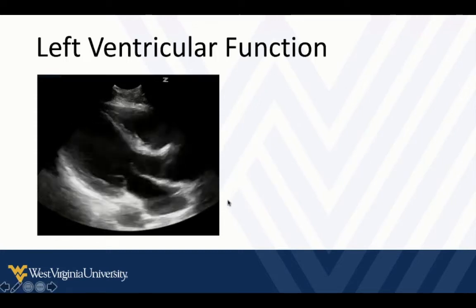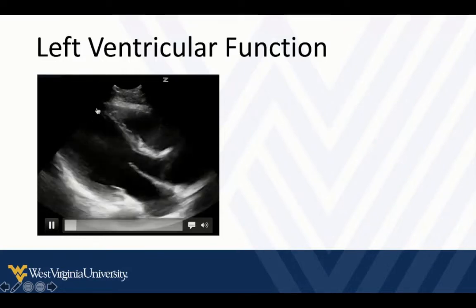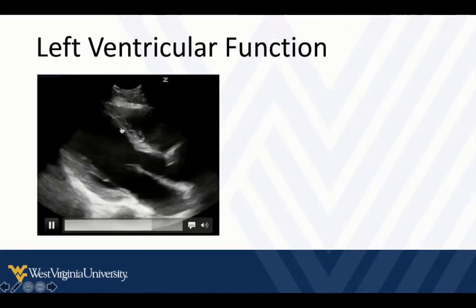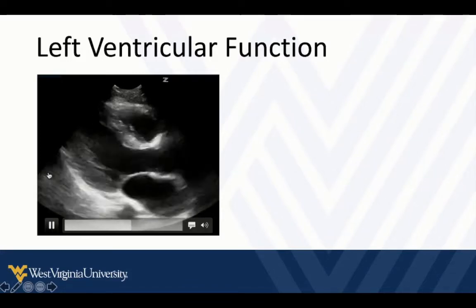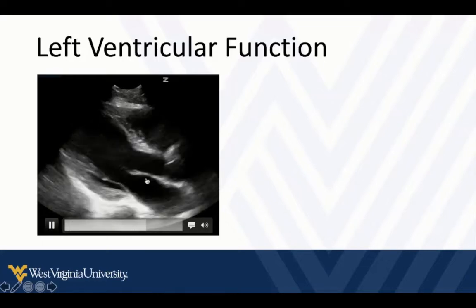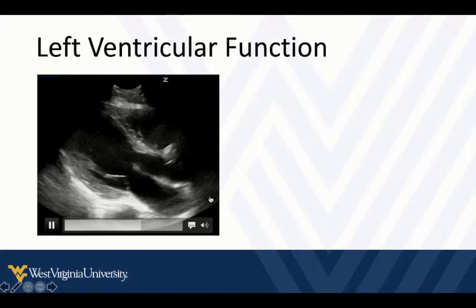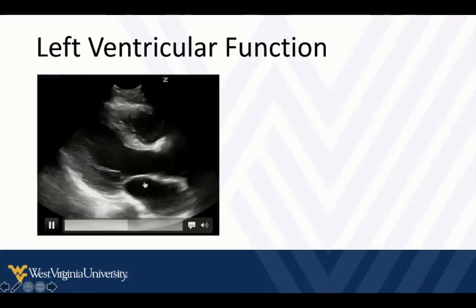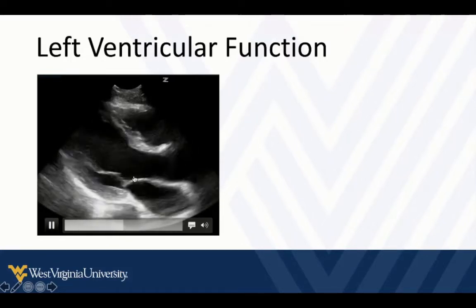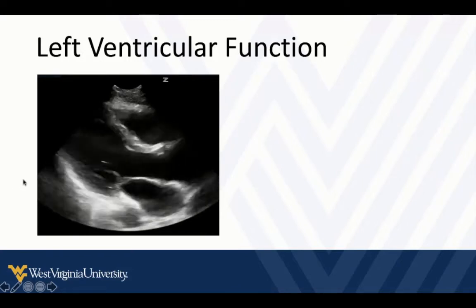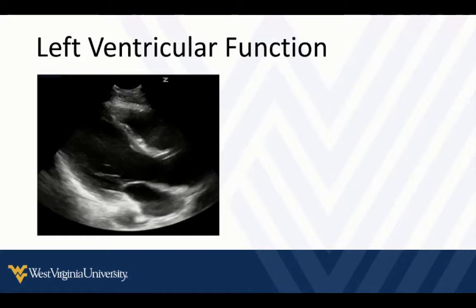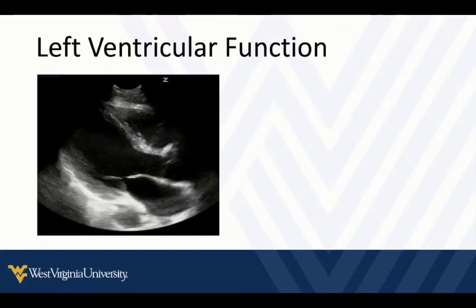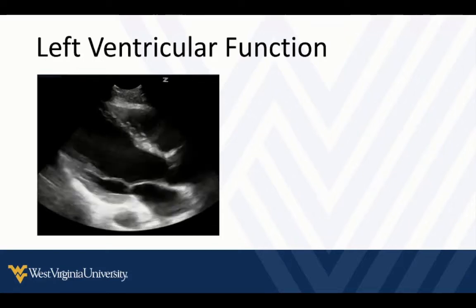Here's a nice parasternal long axis view. You want to start practicing and training your eyes to recognize the thickening of the walls — that's the contraction, that's how the walls thicken — and how much the volume changes during systole throughout the cardiac cycle. The mitral valve gives you a lot of clues. When there's lots of fluid transfer, that causes the mitral valve to open up nice and wide, and during early filling it pretty much slaps up against the septum. If you see that mitral valve opening nicely and slapping up against the septum, they probably have normal left ventricular systolic function. Still want to correlate and look at the rest of the picture, but that's a pretty good indicator of normal function.